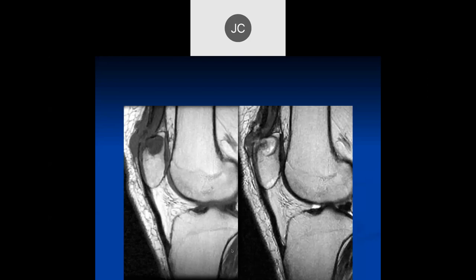There is soft tissue thickening along the distal quadriceps tendon with erosions at the superior patella — this is very characteristic of gout. Notice the sharp margins of the erosion; on CT these would be very sharp, pointed margins, unlike the blunted erosions seen in rheumatoid disease. The superior pole of the patella is a common location for gout, almost as common as the first metatarsophalangeal joint, though slightly less so.